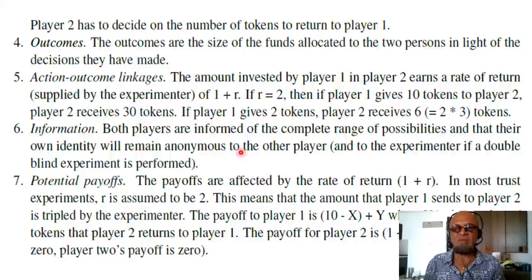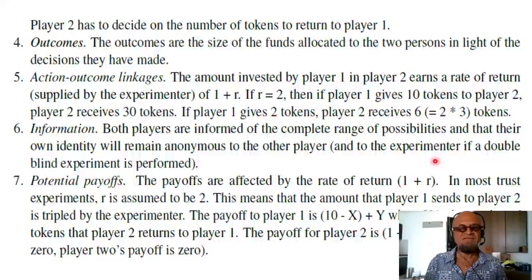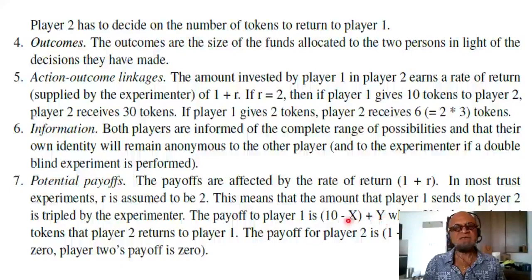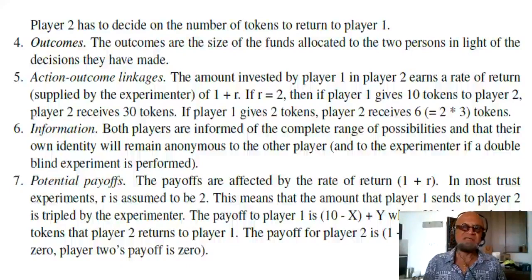Information: both players are informed of the complete range of possibilities, and their own identity will remain anonymous to the other player. In a double-blind experiment this adds different kinds of value. Potential payoffs: payoffs are affected by the rate of return, which is 1 plus R. In most trust experiments R is assumed to be 2. The payoff to player one is 10 minus X plus Y, since player one gives away X and receives Y back. The payoff for player two is 1 plus R times X, minus Y, which is given back to player one.